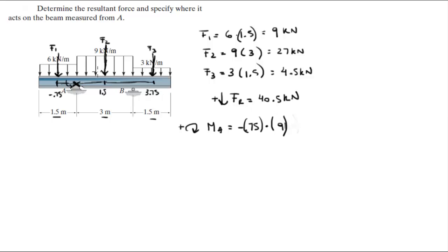The second one is turning this lever arm clockwise with length 1.5 so it's positive 1.5 times F2 which is 27, and the third one is turning this longer lever arm also clockwise of 3.75, so it's positive 3.75 times F3 which is 4.5.